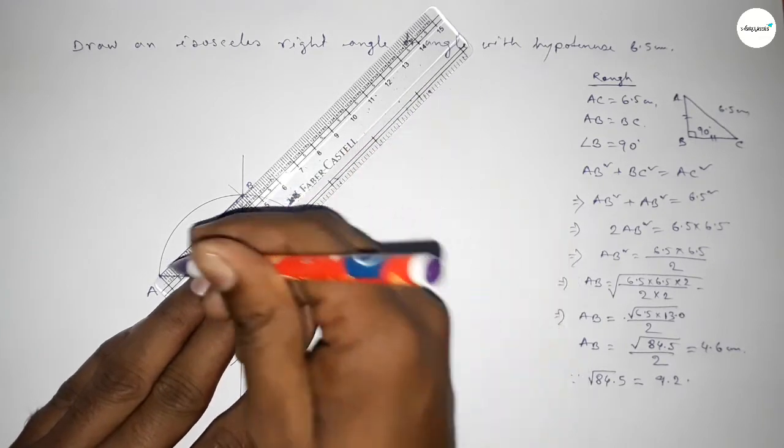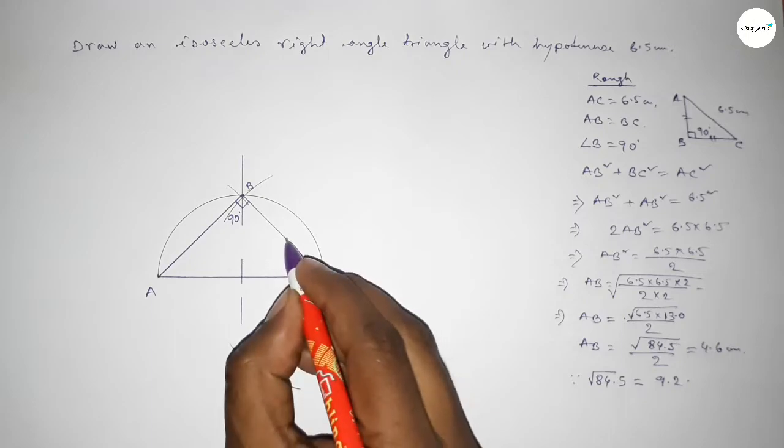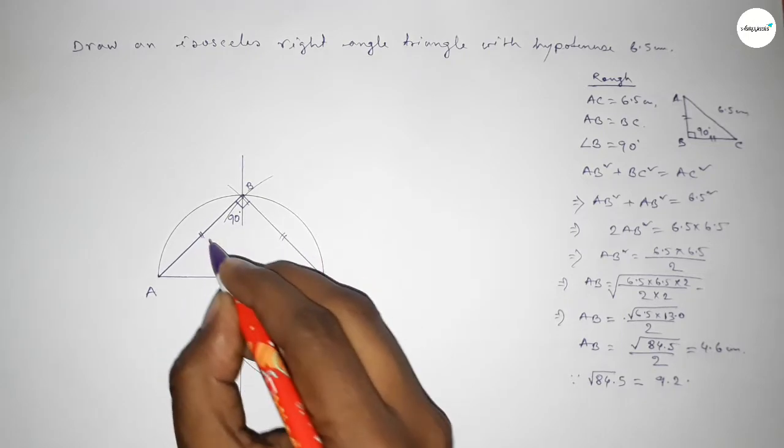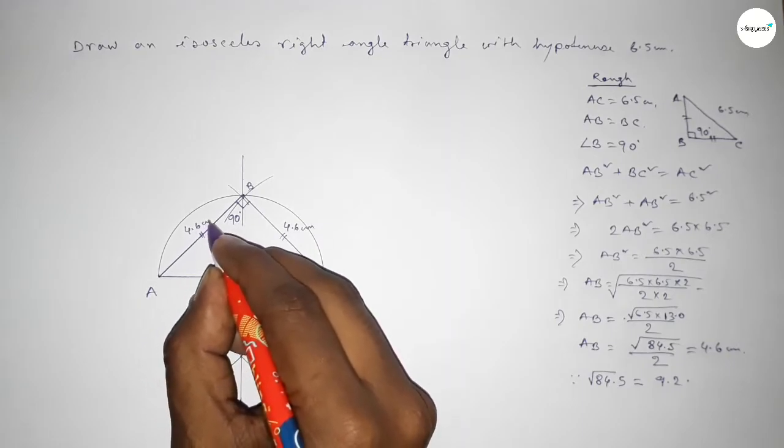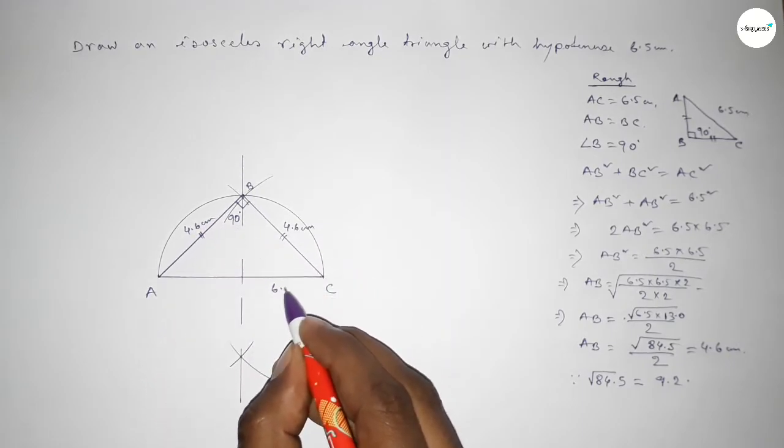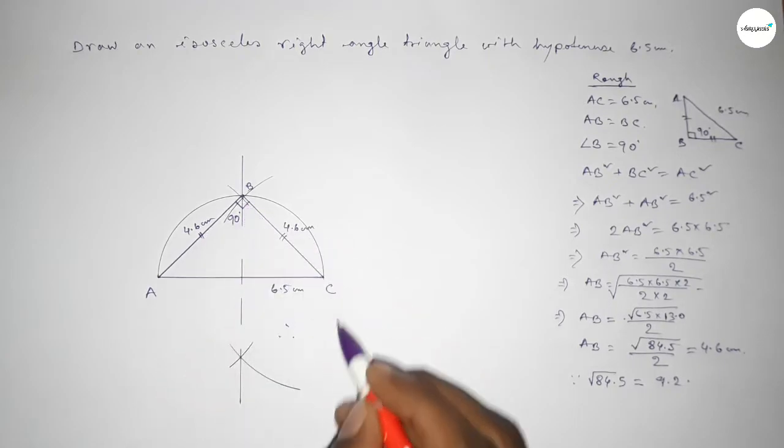4.6 centimeter and this is also 4.6 centimeter perfectly. So BC and AB are equal. So this is 4.6 centimeter and AC equal to 6.5 centimeter. So therefore triangle ABC...